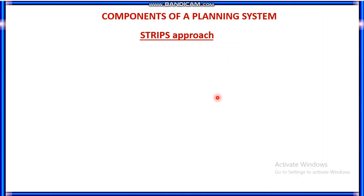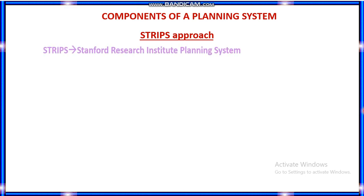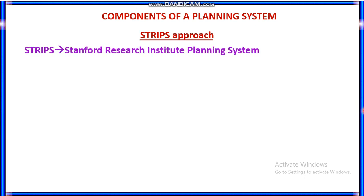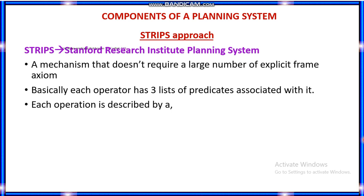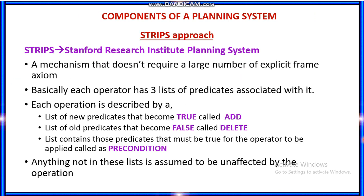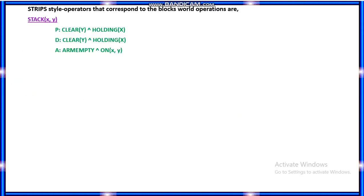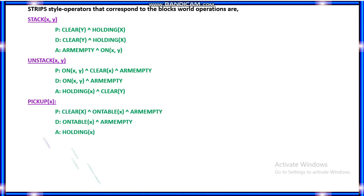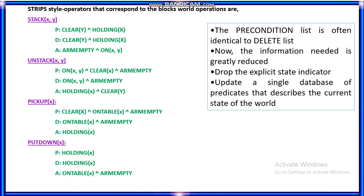Welcome, we will continue again with the STRIPS approach of the planning system. STRIPS stands for Stanford Research Institute Planning System, and it uses a list of old predicates, new predicates, and a precondition list, as shown in the previous class.